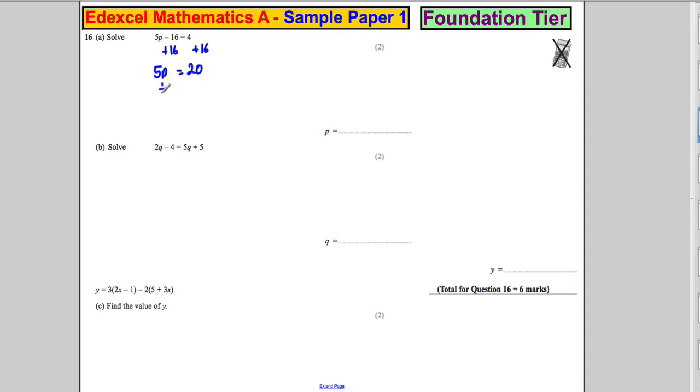And I want 1P, so I'm going to divide both sides by 5 to get 1P. P must be 4. Check your answer. 5 times 4 is 20, take away 16 is 4. Now you could get that by checking your workings as well.